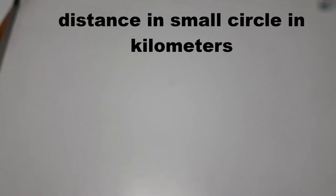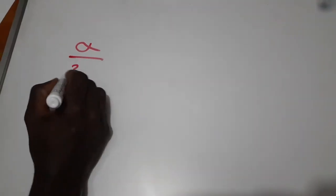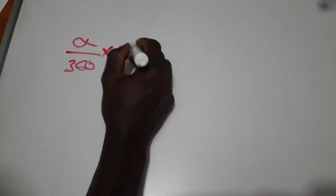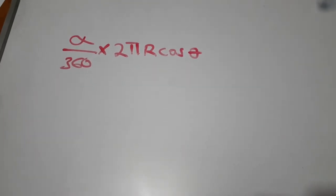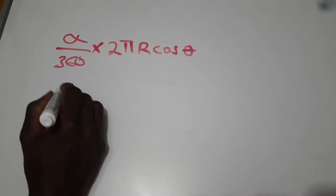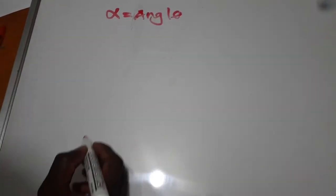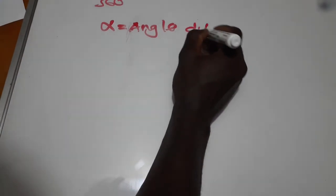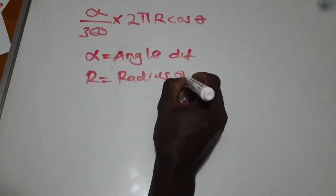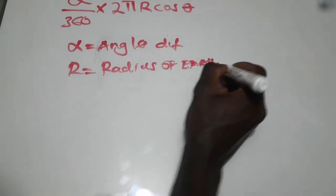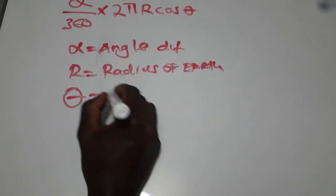To begin with small circle distance, the formula I want you to understand is: distance in small circle equals angle difference over 360, times 2πr cosine of that latitude. Here, r is the radius of the Earth and this is the latitude of the point.